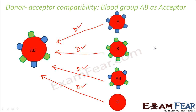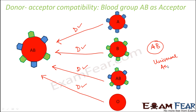So we can say that blood group AB is a universal acceptor — it can accept blood from any person belonging to any blood group. So if a patient who has AB blood group needs blood, he can accept blood from anybody with A, B, AB, or O.